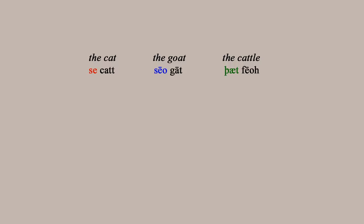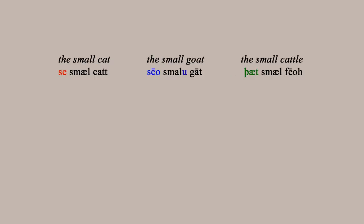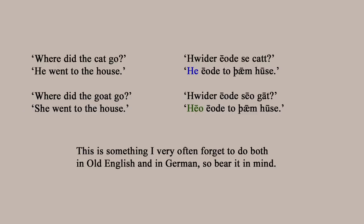The gender of a noun also affects the adjectives you use to describe that noun — you have to add a particular ending to an adjective depending on what gender the noun is. So instead of 'the small cat', 'the small goat', 'the small cattle', each would take a different adjectival ending. And if you're referring back to a noun using a pronoun like 'it' in English, you'd go with its grammatical gender — so you'd call the cat 'he', the goat 'her', and the cattle 'it'. This is something I always forget to do in Old English, and actually usually forget in German as well.